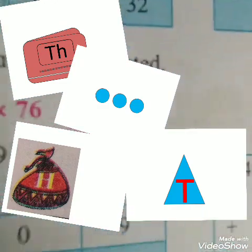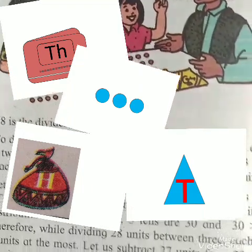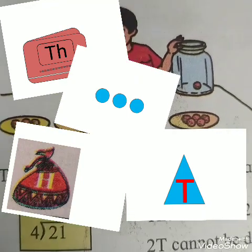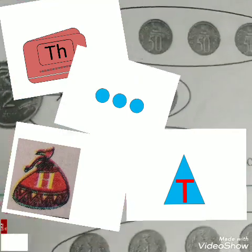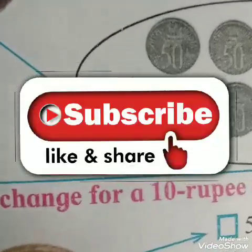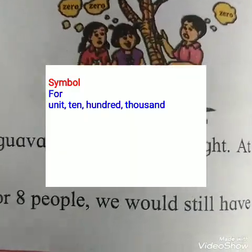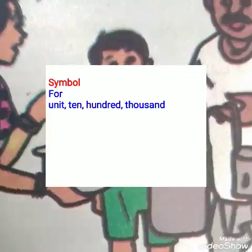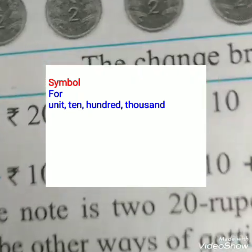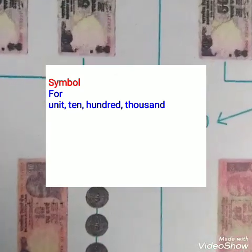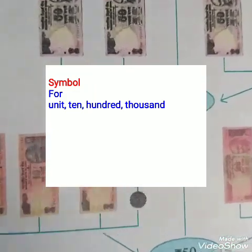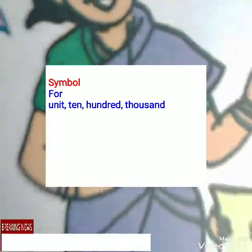We are talking about 4-unit numbers. Please subscribe to my YouTube channel Talimi Samanda. In this lesson we separately describe the unit, 10, 100, and 1000 symbols. Every symbol is useful for making a 4-digit number. See it carefully and learn how to make a 4-digit number.